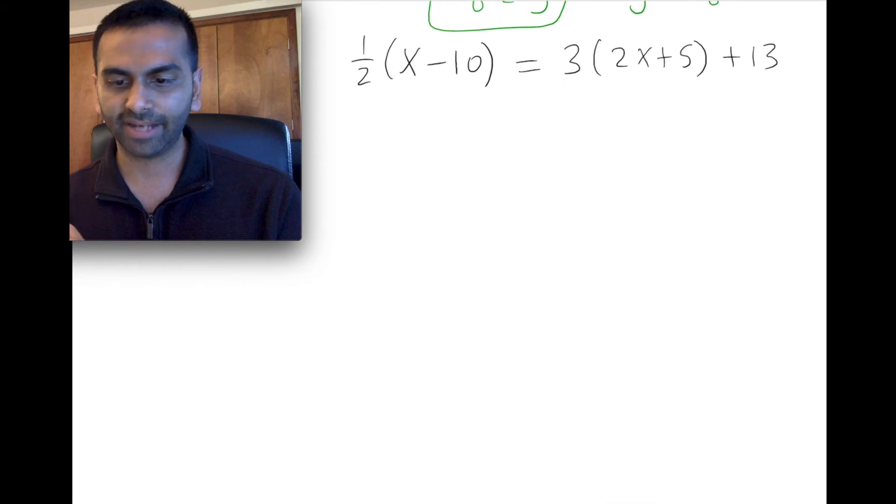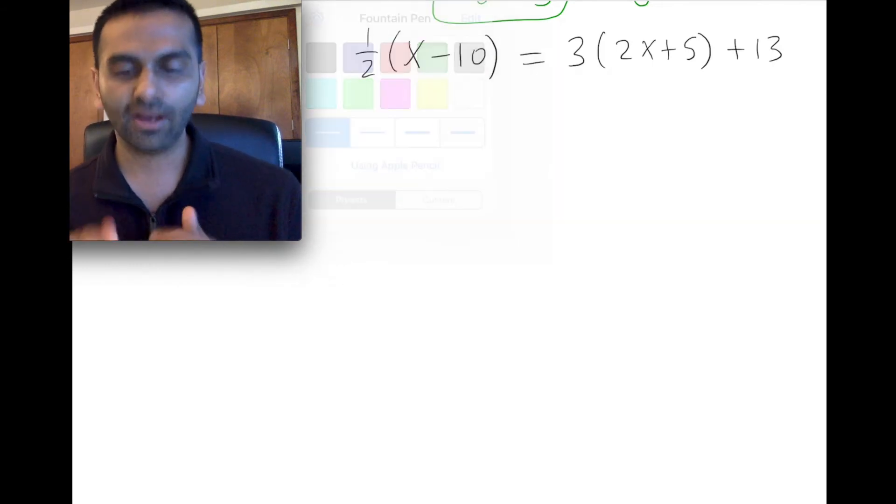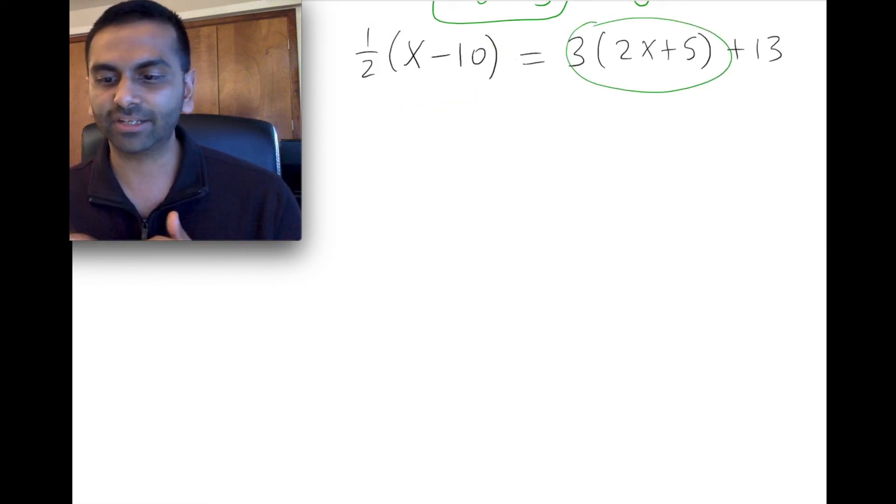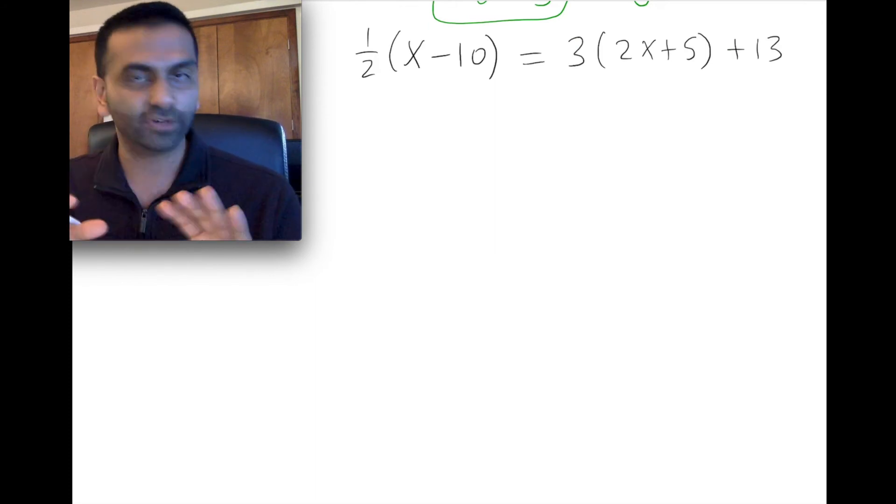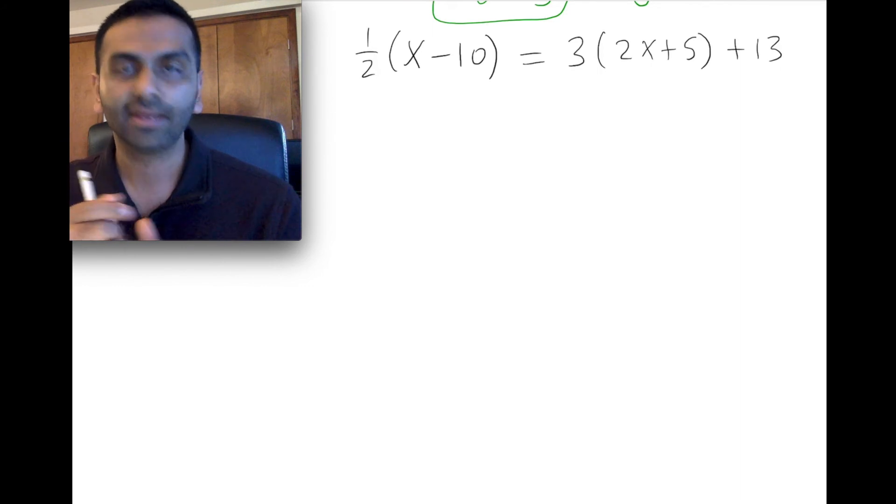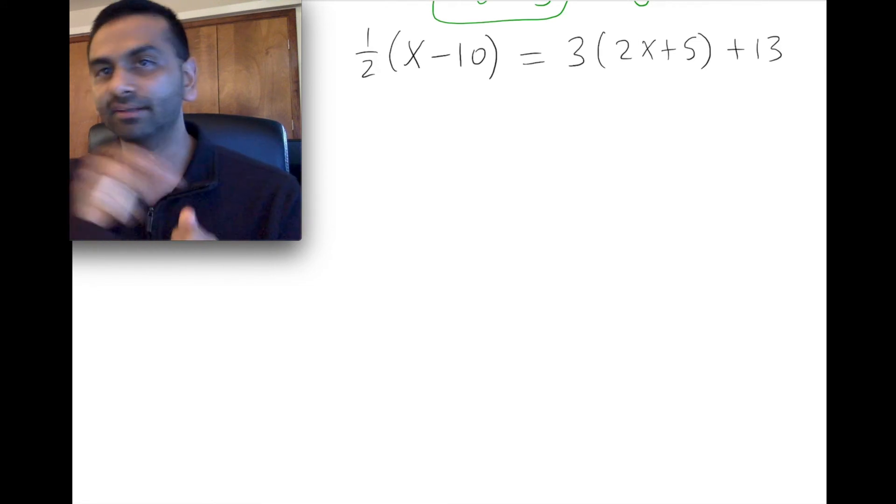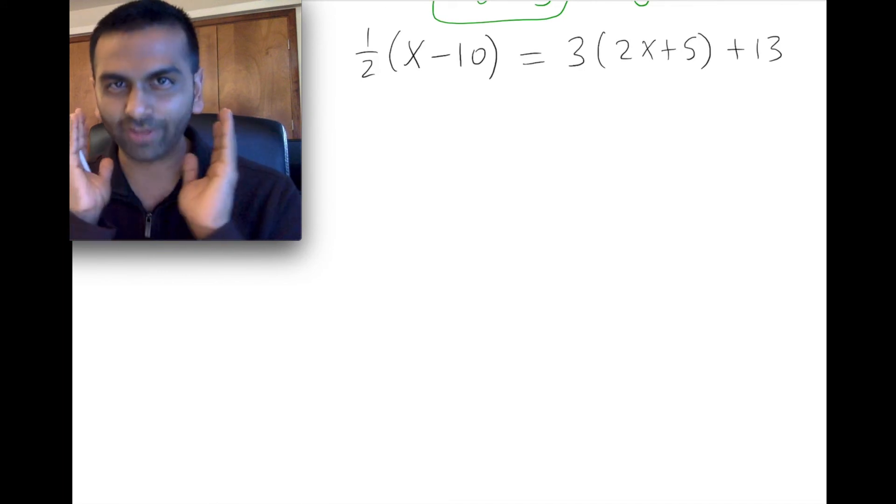All right, last example problem for today, this monstrous-looking thing. So what do we do? Step 1, panic. Step 2, oh, well, let's see. I've got this thing, this half can distribute here, this 3 can distribute here. So in general, one strategy is always just to distribute first, and once you have everything distributed, each term is either going to be a constant or something with an x in it. Once you have it down to that, you can just collect all the like terms, all the terms with just an x on one side, the constants on the other, and then divide as needed to get x by itself.